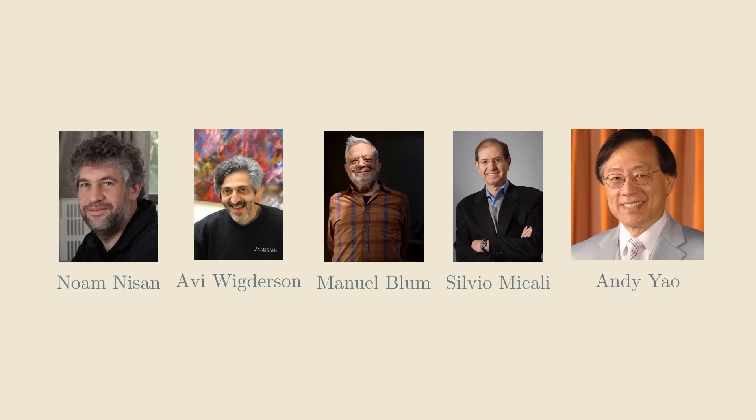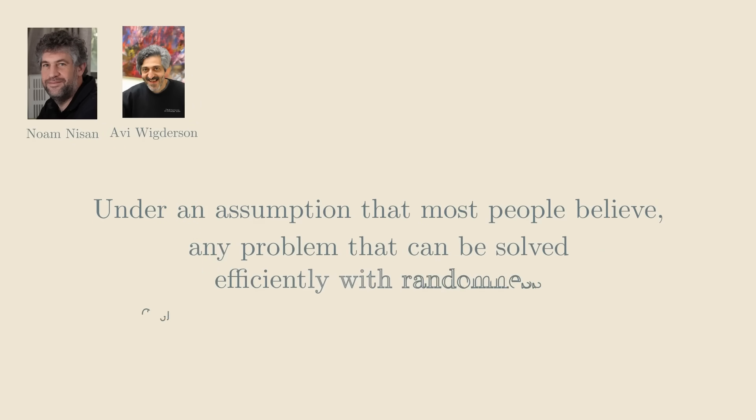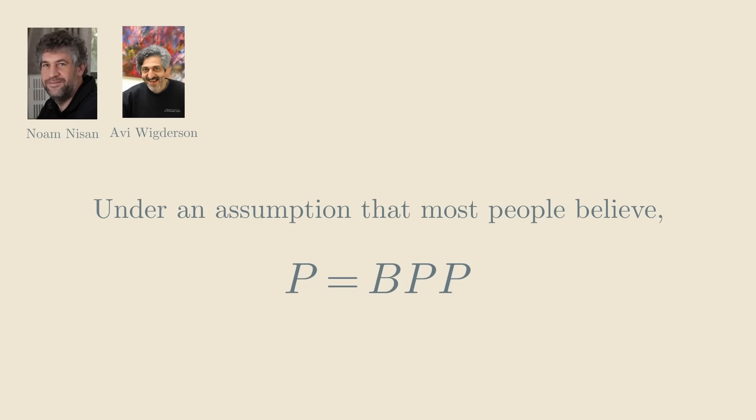Together with Noam Nisan, and building on earlier work by a bunch of other people, Wigderson proved the following theorem that says that under an assumption that most people believe, any problem that can be solved efficiently with randomness can also be solved efficiently without it. The conclusion of the theorem, stated more precisely, is that P equals BPP. So let's define what these mean.